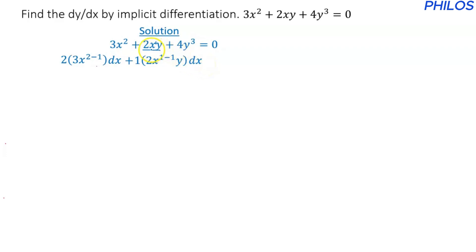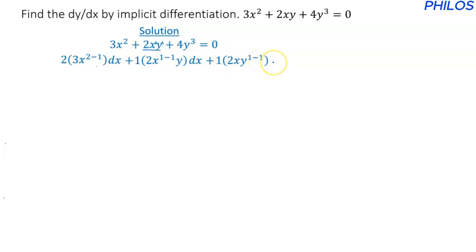It's not done — we also differentiate this same 2xy term with respect to y, since it has two variables. So we write plus. Differentiating with respect to y: y also has an exponent of 1, so we multiply by 1 and subtract 1 from the exponent of y, giving 1 times 2x times y to the power of 1 minus 1, and we write dy.